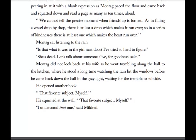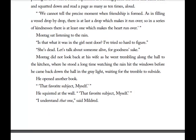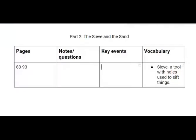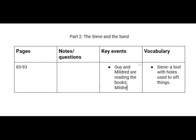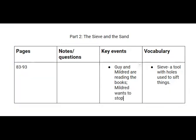'Montag sat and listened to the rain. Is that what it was in the girl next door? I tried so hard to figure. Oh, she's dead. Let's talk about someone alive for goodness sake.' Here in our notes we can add this into our key events: Guy and Mildred are reading the books. Mildred wants to stop talking — she clearly wants to go back to TV. She is not a fan of reading the books or thinking about what the books contain.